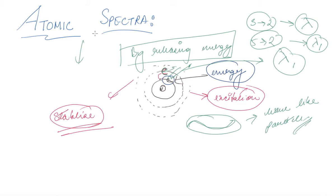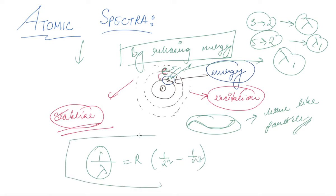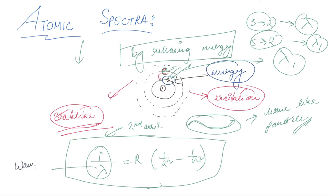Atomic spectra were first studied by Jacob Balmer, and the Balmer series is given by: 1/λ = R × (1/2² − 1/n²). This formula describes the wavelength of any electron transition that comes down to the second orbit — we call this the Balmer series. Here λ is your wavelength and n can be 3, 4, or higher.